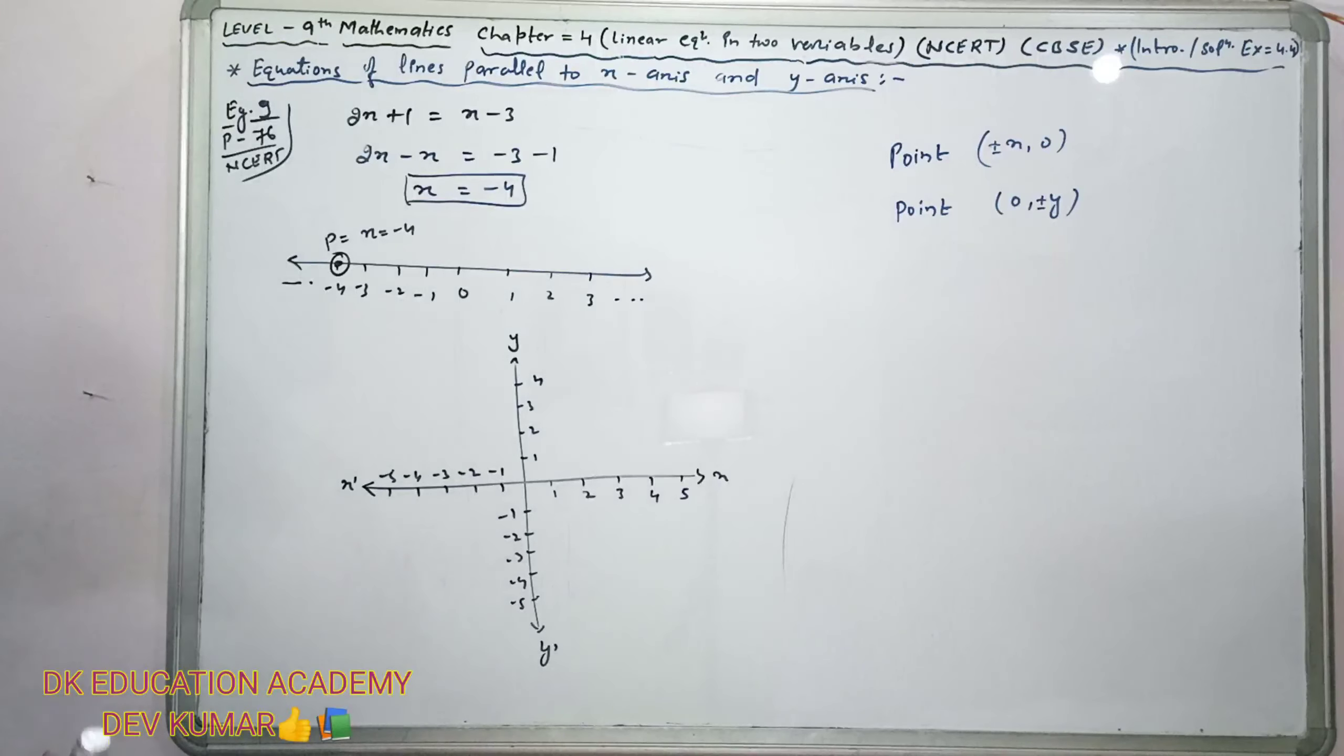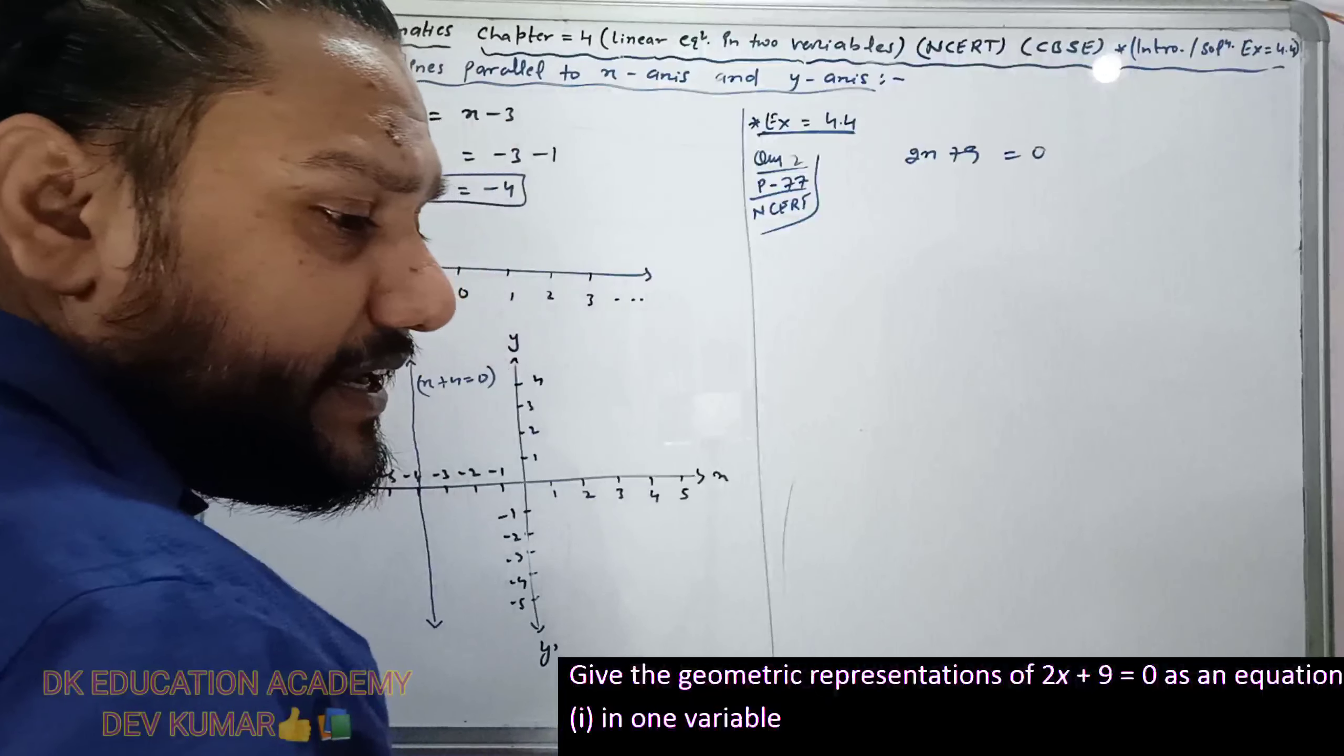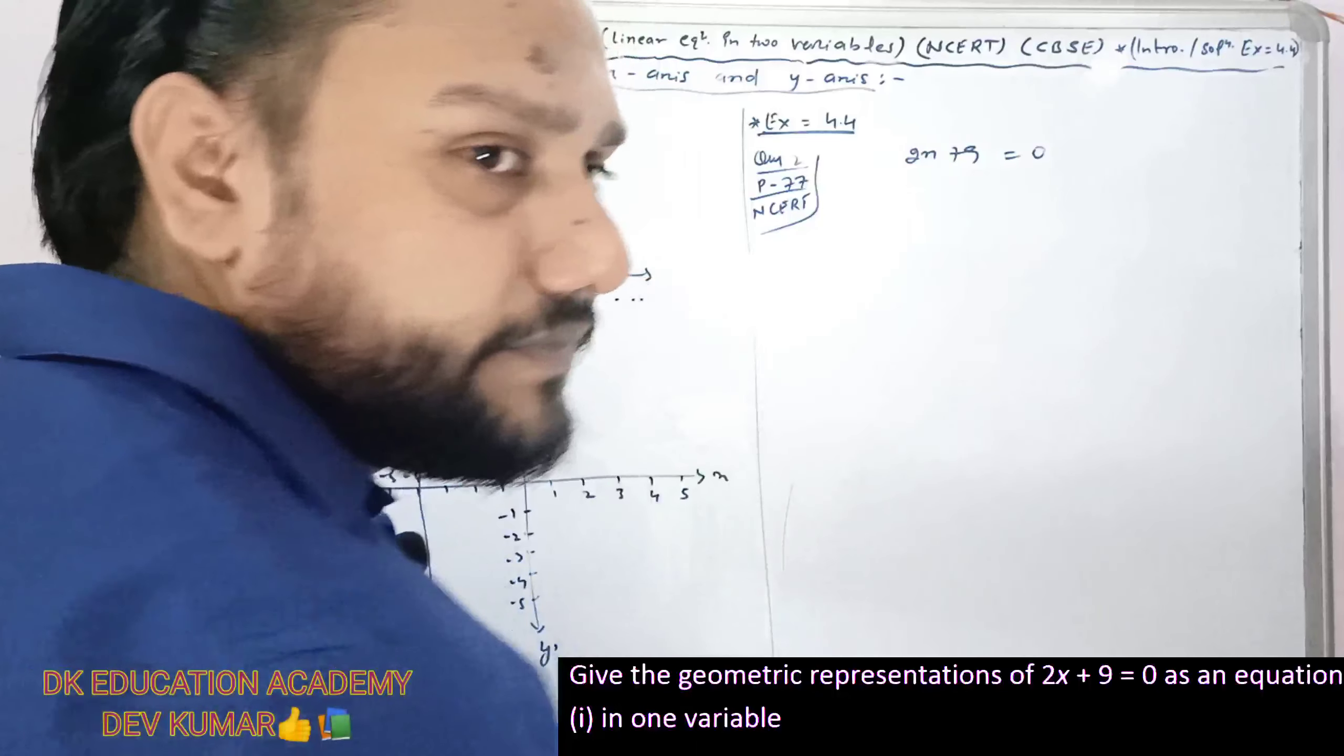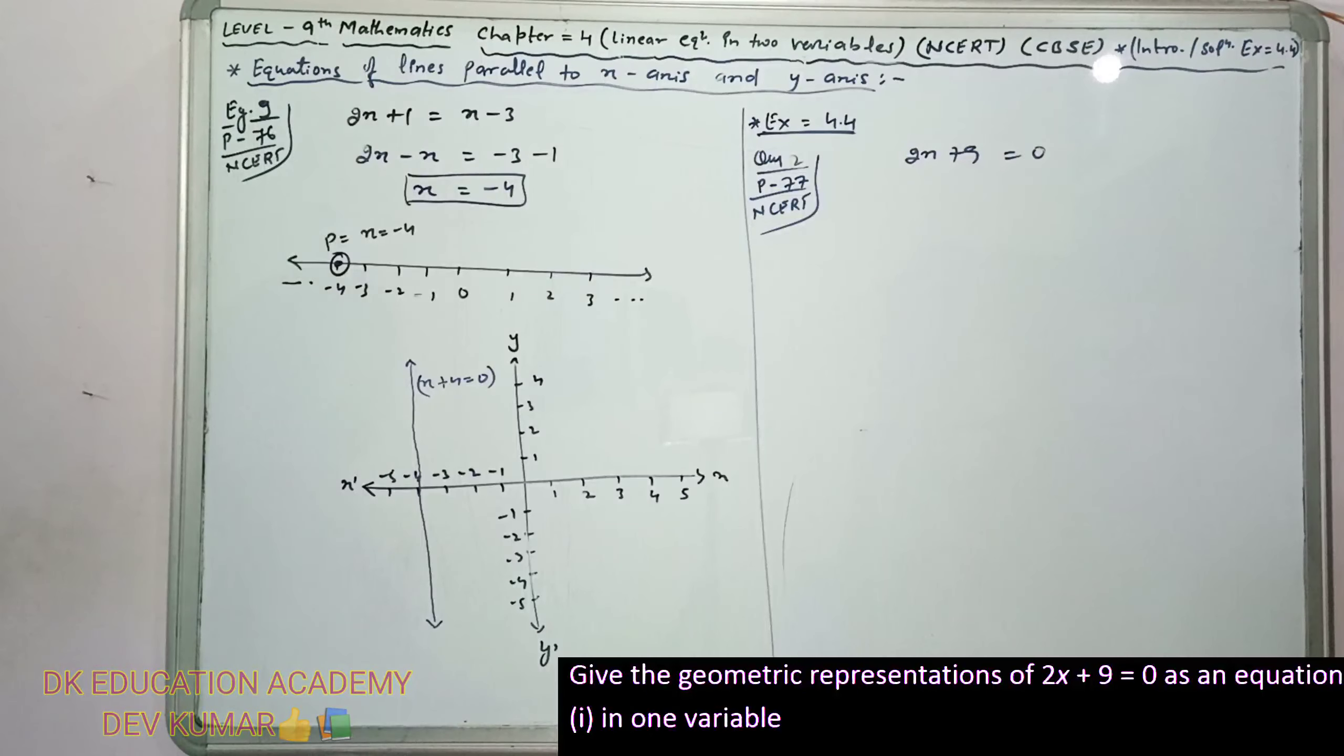The second question is give the geometric representation of 2x plus 9 equals 0 as an equation in one variable and in two variables.